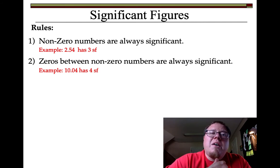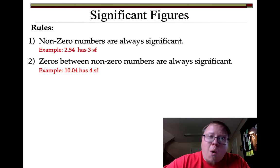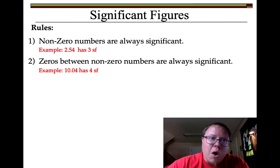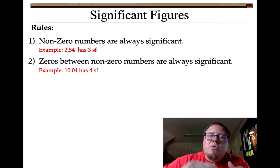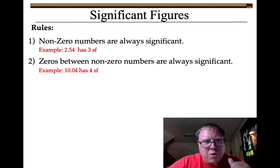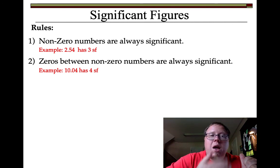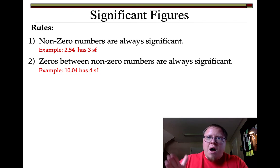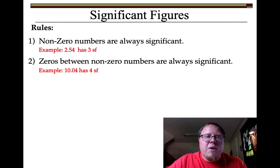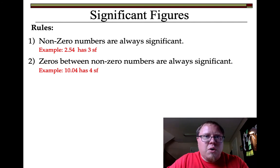The 1 for the tens place is significant, and they were able to read it to .04. That means they had a .1 line and a .0 line and were reading between them, saying it's about .04 — not quite to the .1, but over the .0. So they were able to read the tenths place and the hundredths place, meaning they had lines for everything in between. If you can figure out that the 1 and the 4 are significant, everything in between is going to be significant too, even if it's a 0. Four significant figures.